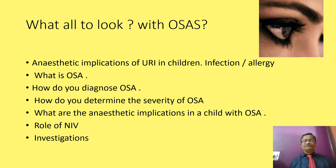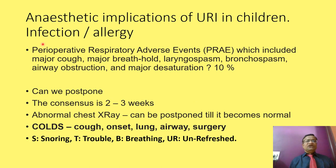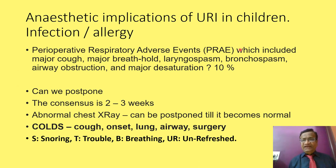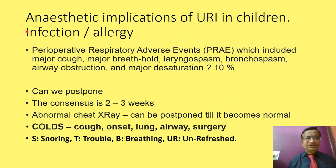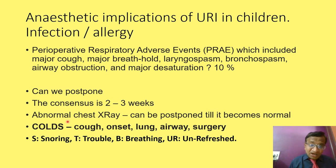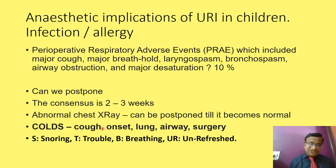Regarding anesthetic implications of upper respiratory tract infection (URI) in children, it is well established that perioperative adverse events include major cough, breath hold, laryngospasm, bronchospasm, airway obstruction, and major desaturation of more than 10 percent. The consensus is to postpone if there is a URI for two to three weeks, or if there is an abnormal chest X-ray, postpone until the X-ray normalizes. The COLDS score assesses cough onset, lung infection, airway condition, and type of surgery.